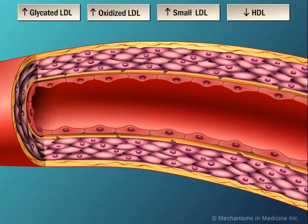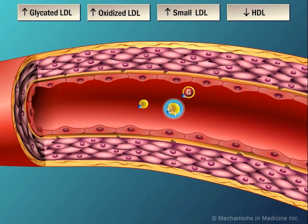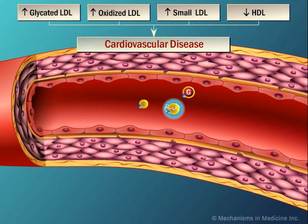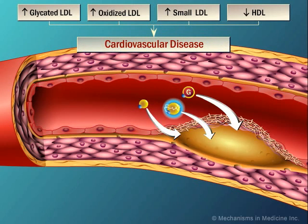In summary, there are multiple lipid abnormalities that can be found in diabetes. These include an increased level of glycated, oxidized, and small-dense LDL particles, along with a reduced level of HDL cholesterol. These abnormalities interplay to contribute to the development of the accelerated atherosclerosis of diabetes.